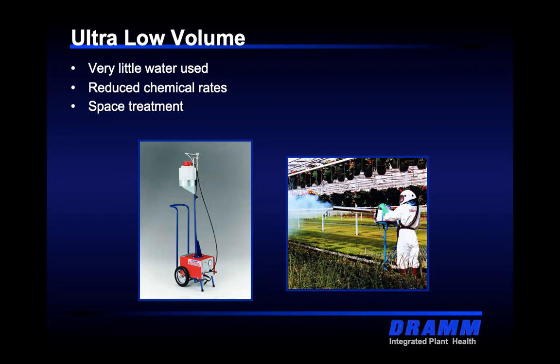If you have a 30-by-96 greenhouse and you put a fog in there, it will treat top to bottom. If you have three gutters and they're open, you'll need to treat all three at the same time — you can't contain the fog unless you drop plastic or shut a door. These machines are wonderful for getting into a very thick canopy. If you've got baskets up high that are hard to treat, a fog is the way to go. The more dense you are, the better a fog moves through that airspace.